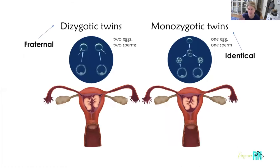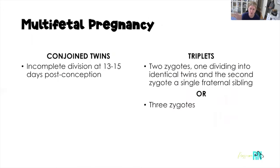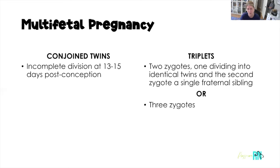Here's a visual of dizygotic versus monozygotic twins. Remember, 'di' means two and 'zygotic' means zygote — so dizygotic are your fraternal twins. 'Mono' means one, so monozygotic twins come from one egg and one sperm. Conjoined twins result from incomplete cell division, usually occurring around 13 to 15 days post-conception. Triplets can come from two zygotes — one that divides into identical twins and one fraternal sibling — or from three completely separate zygotes, meaning all three are fraternal and none are genetically identical.